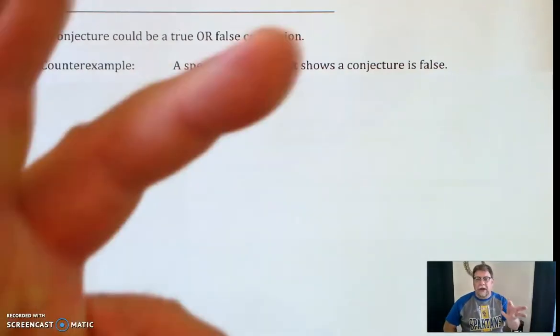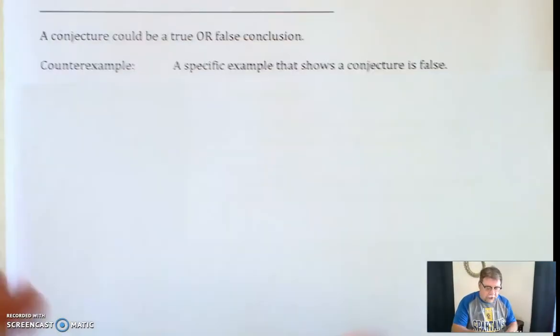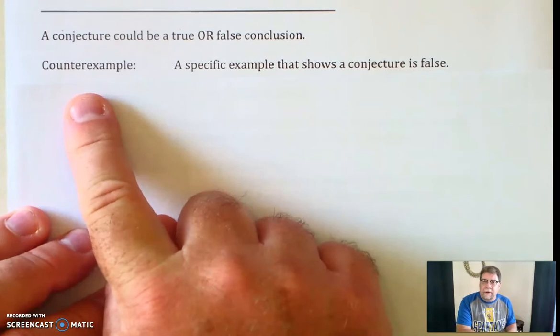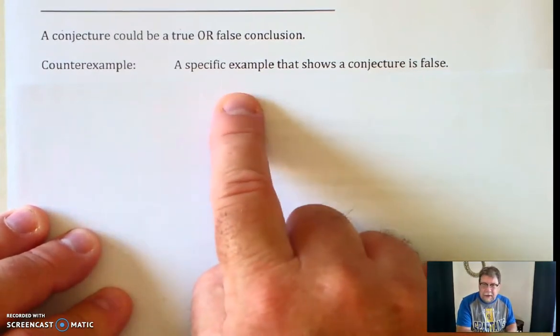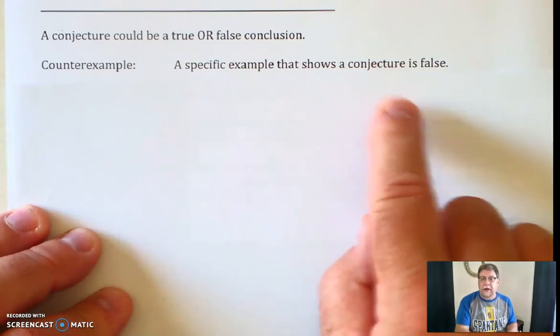If it's false, if you look at it and determine, okay, this is a false statement, you might have to find what's called a counterexample. A counterexample is a specific example, a particular number or a particular image that shows that the conjecture is false.